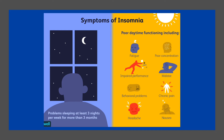Sleep onset insomnia is difficulty falling asleep at the beginning of the night, and is often a symptom of anxiety disorders. Delayed sleep phase disorder can be misdiagnosed as insomnia, as sleep onset is delayed to much later than normal whilst awakening spills over into daylight hours. Two thirds of patients with difficulty falling asleep wake up in the middle of the night, with more than half having trouble falling back to sleep. Early morning awakening is an awakening occurring earlier than desired with an inability to go back to sleep, before total sleep time reaches 6.5 hours, and is also associated with depression.